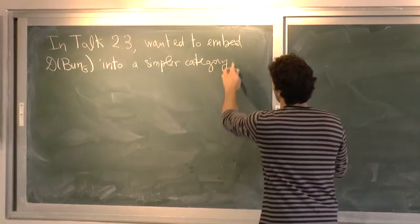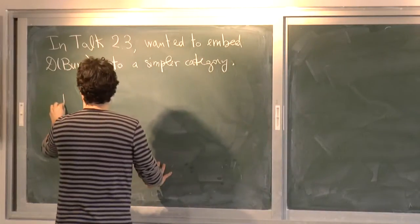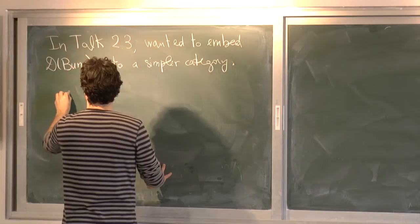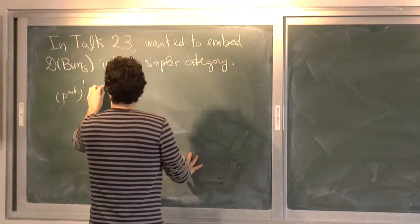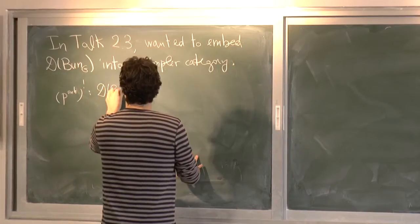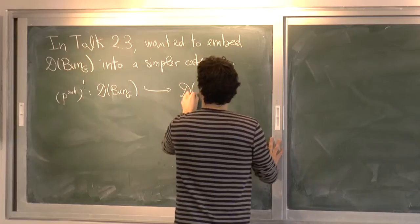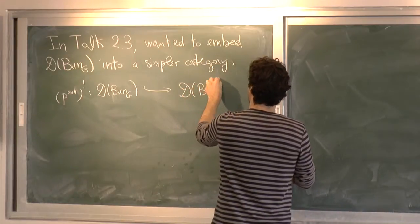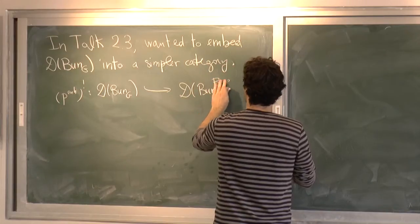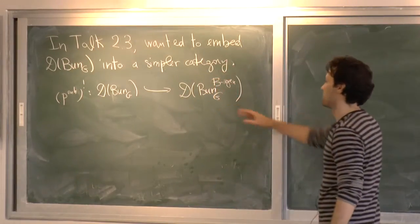And what I saw at the end of the hour was that I had this functor of pullback enhanced, P enhanced pullback from Bun_G into Bun_G with the generic B-reduction. And I said that this functor was fully faithful.